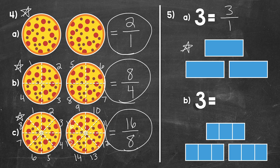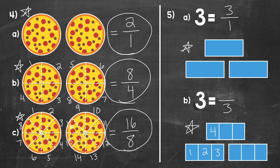Let's move on to B. We can see that the rectangles are divided into thirds — three equal parts each. So let's write a fraction equal to three using thirds. Since the rectangles are divided into three equal parts, three is our denominator. Now we need to see how many thirds make up those three whole rectangles. We count: 1, 2, 3, 4, 5, 6, 7, 8, 9. So nine is our numerator.